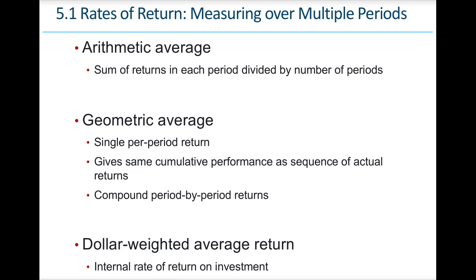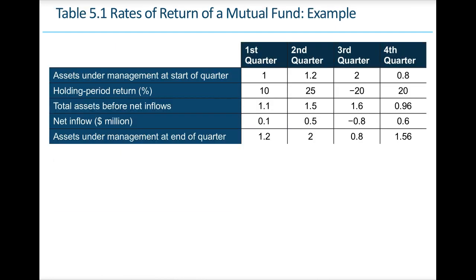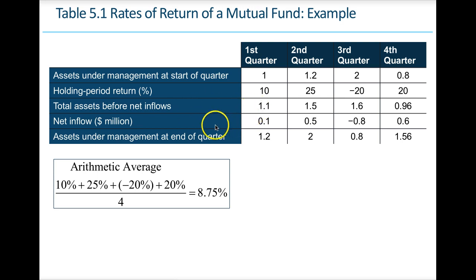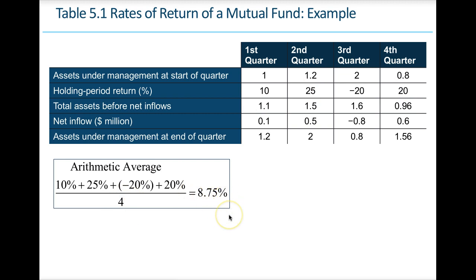Here is some information: assets under management at the start of the quarter, the holding period return, total assets before net inflows, net inflows, and assets under management at the end of the quarter. For the arithmetic mean, we take 10% plus 25% plus negative 20% plus 20%, divided by four quarters. The mean would be an 8.75% return. For the geometric average, we compute (1.10 × 1.25 × 0.80 × 1.20) raised to the power of one-fourth, then subtract one. That gives a geometric mean of 7.19%.